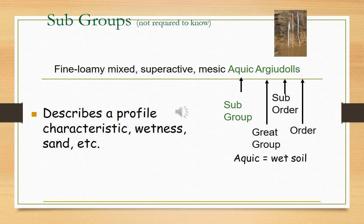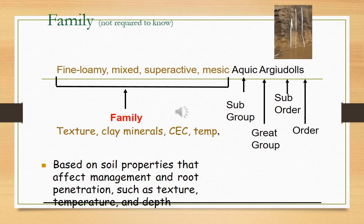Each soil great group is divided into three kinds of subgroups: one representing the central concept of the soil group, a second which has properties that tend towards other orders, suborders, or other great groups, and a third which has properties other than those listed in the first two categories. More than 1200 subgroups are recognized.